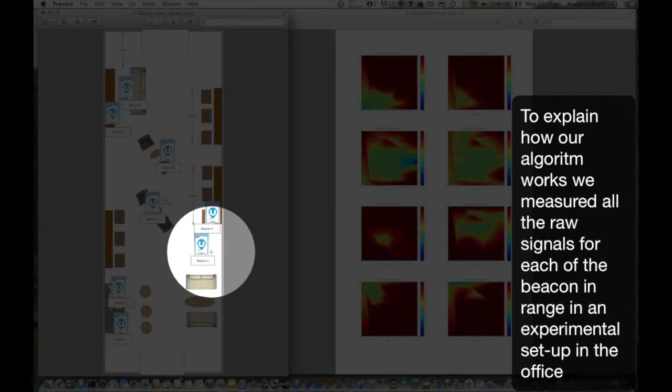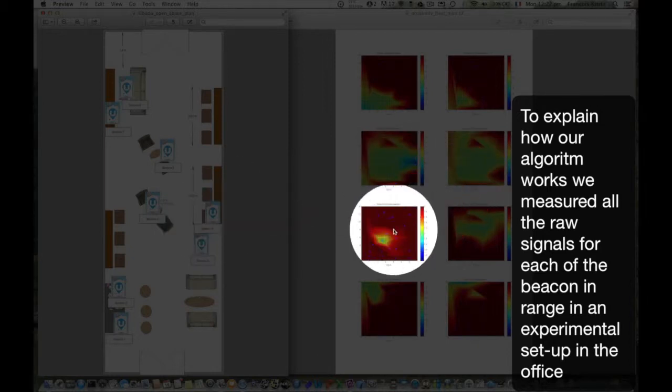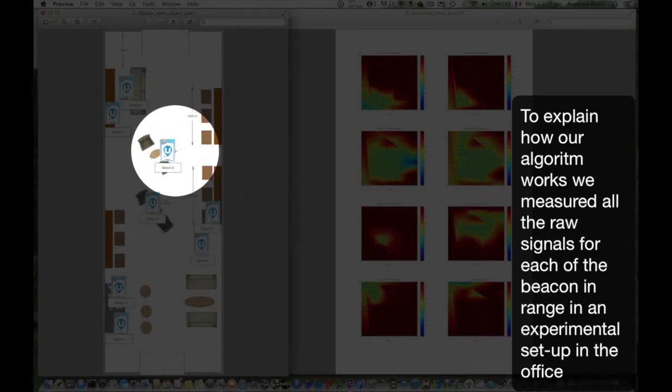Each heat map corresponds to a beacon and we measure the signal of the proximity, the RSSI, and the weighted average that we used to compute the position.